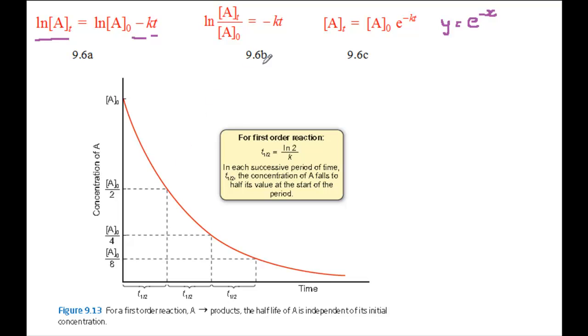From equation 9.6b, you can work out a value for the half-life of the reaction, t a half. This is the time it takes for the concentration of A to fall to half its initial value. That is, the concentration of A at time t equals its initial value, A0 over 2.